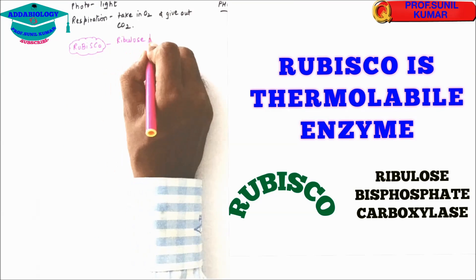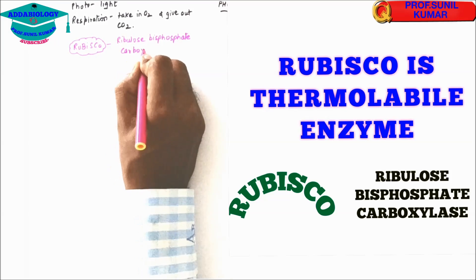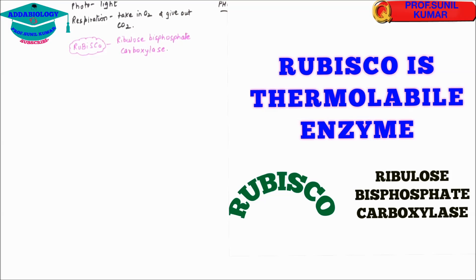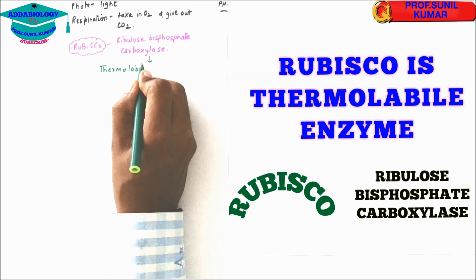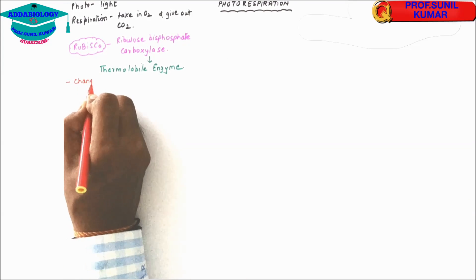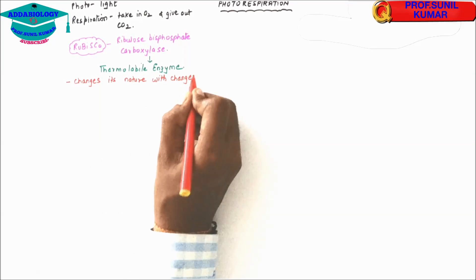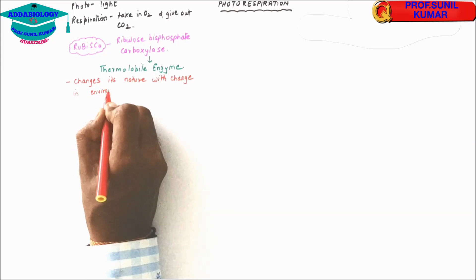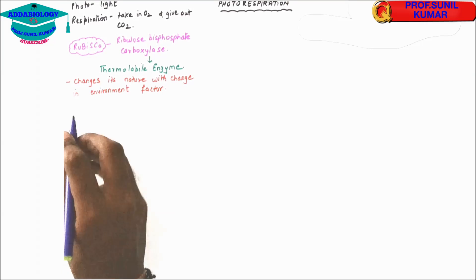Rubisco, ribulose bisphosphate carboxylase, one of the most important enzymes of Calvin cycle, it is a thermolabile enzyme. Now when we talk about thermolabile enzyme, it means it changes its nature with respect to change in temperature. So rubisco, under high temperature will have different nature to work and under low temperature will have different nature to work.